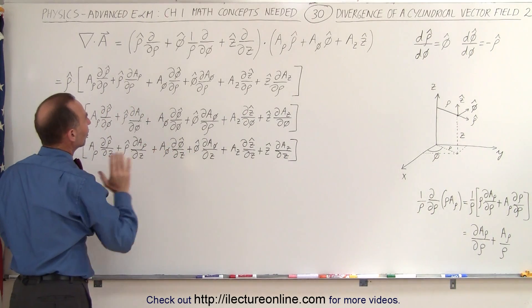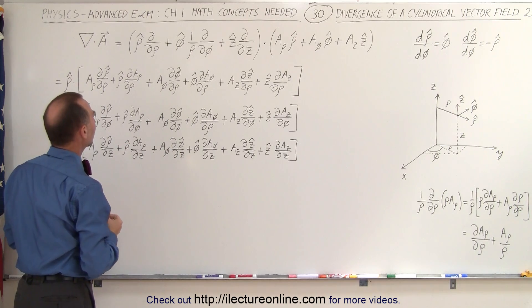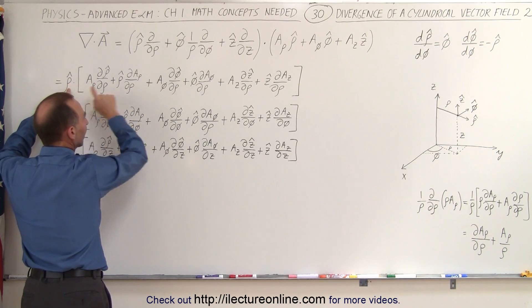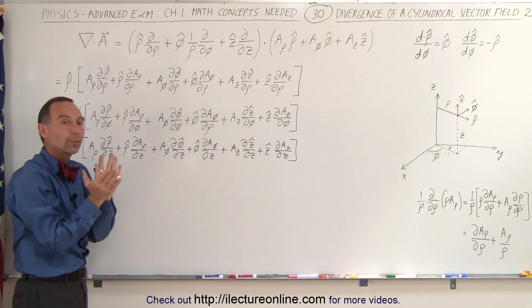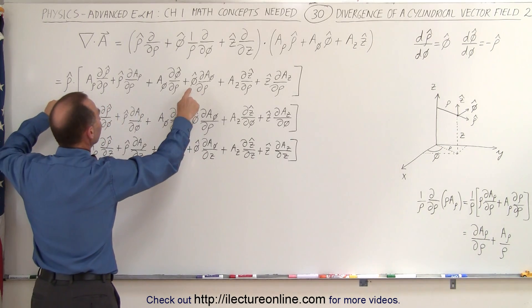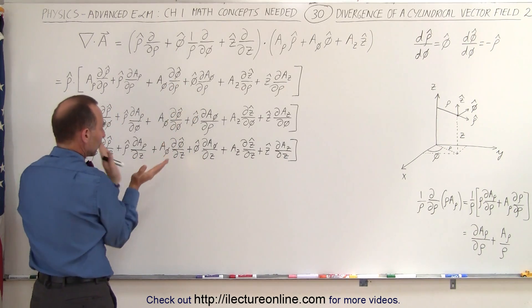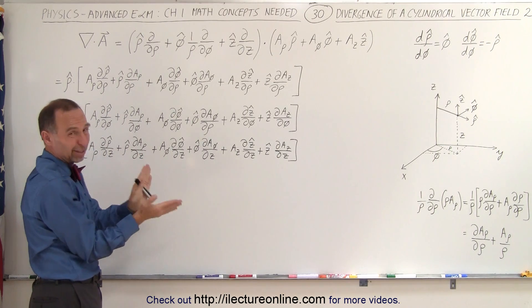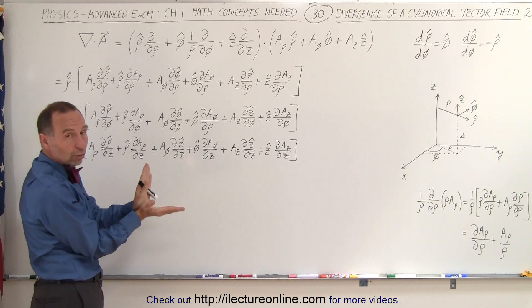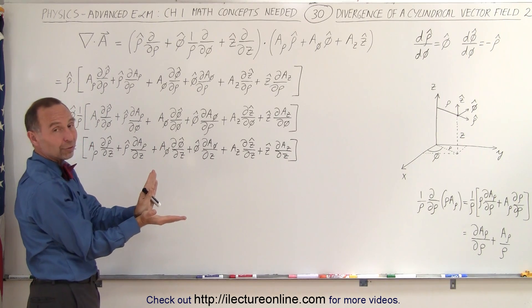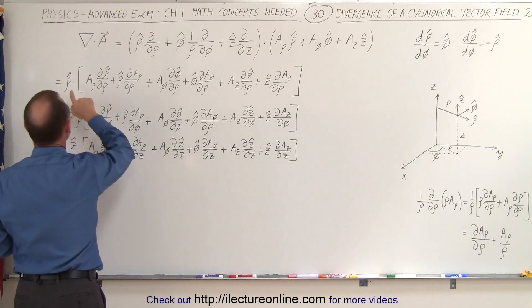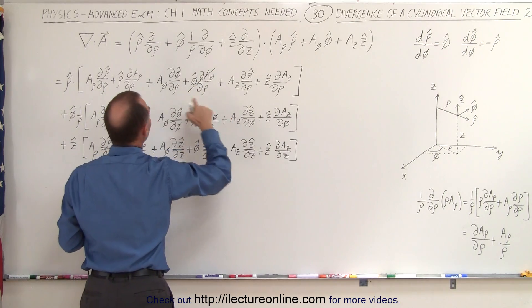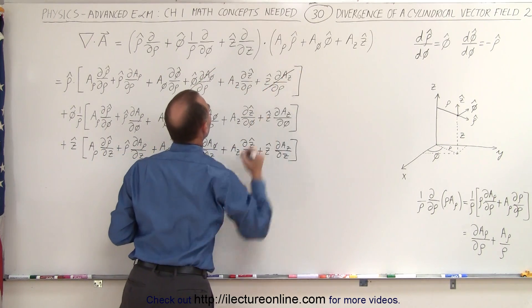Now notice that some of these terms will automatically go to zero. Whenever we have a dot product of a unit vector with another unit vector, if they're orthogonal or perpendicular to each other they will simply negate — because the dot product equals the magnitudes (one times one, since they're unit vectors) times the cosine of the angle between them, and the cosine of 90 degrees is zero. So rho-dot-phi becomes zero, and rho-dot-z also becomes zero.